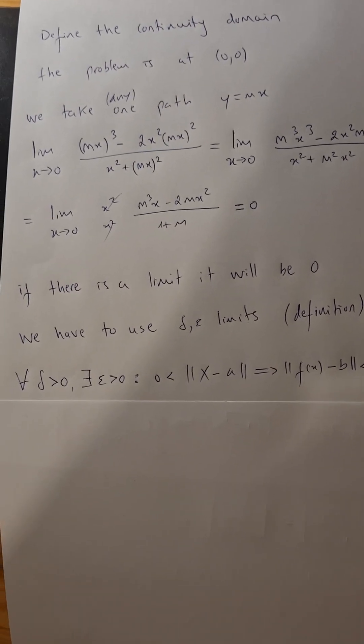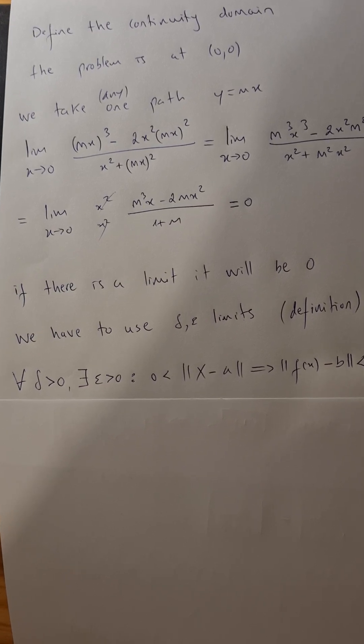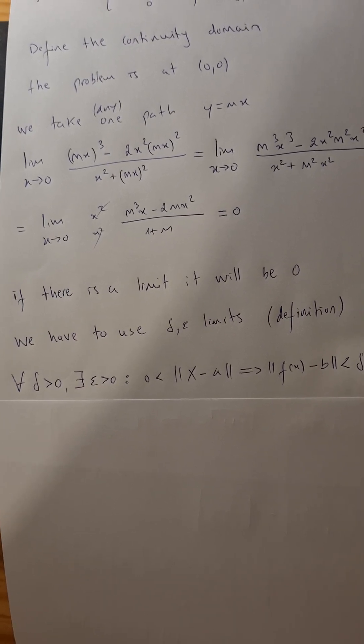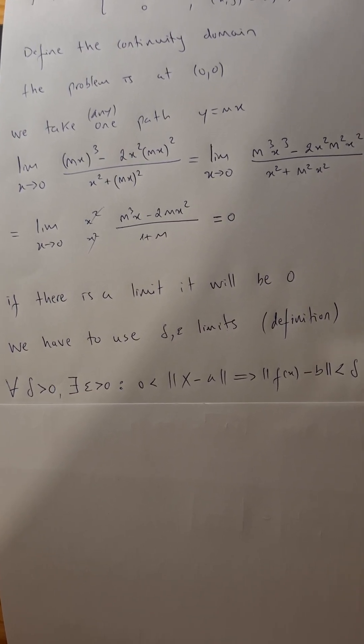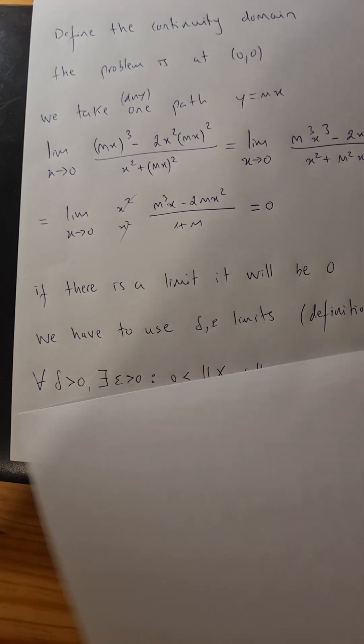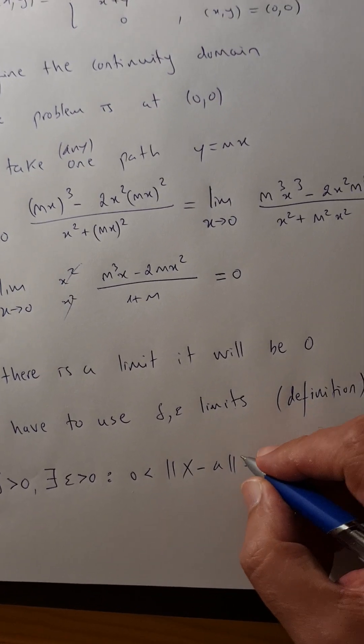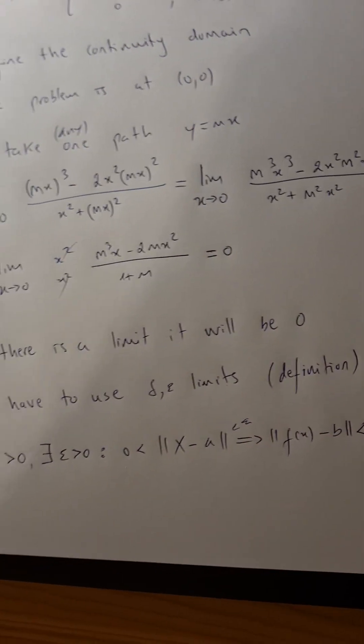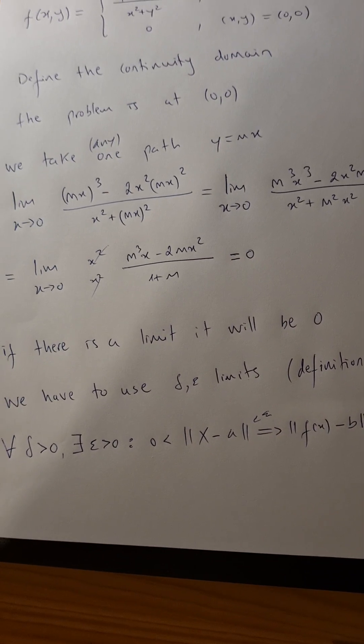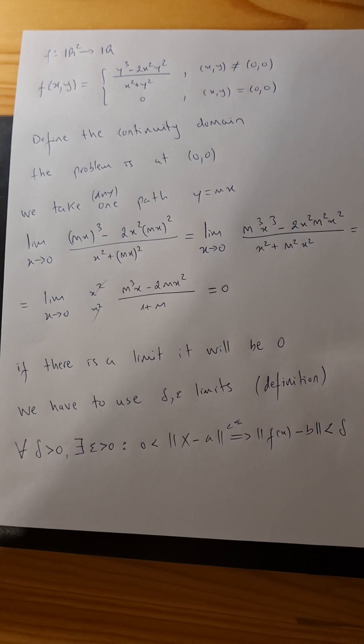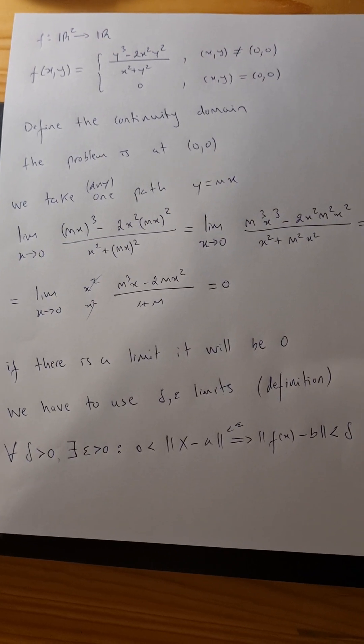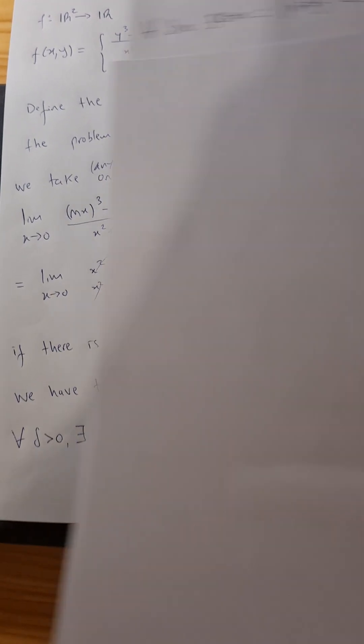For all delta, there is an epsilon positive where when x minus a... oh, something missing here, right? x minus a smaller than epsilon, f of x minus b will be smaller than delta. Let's see that again.